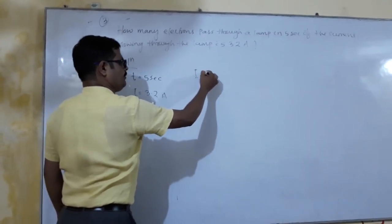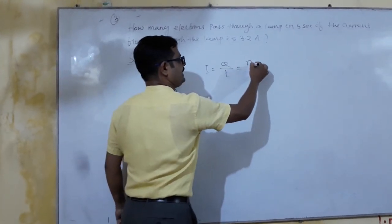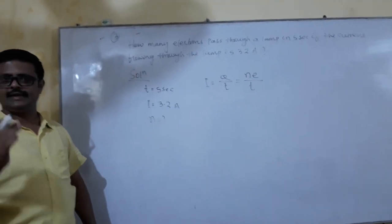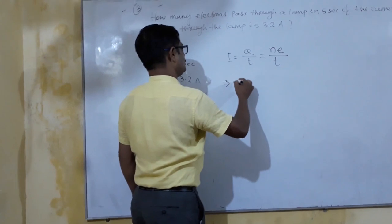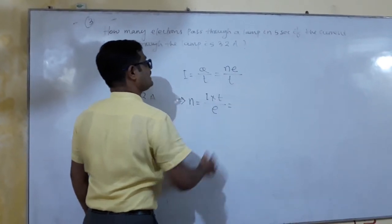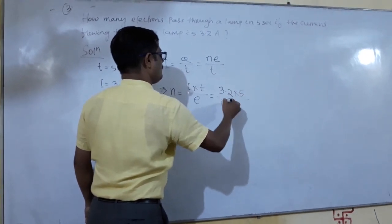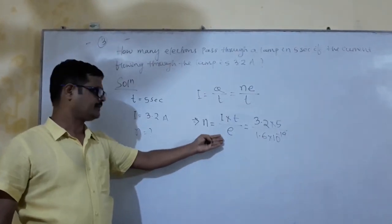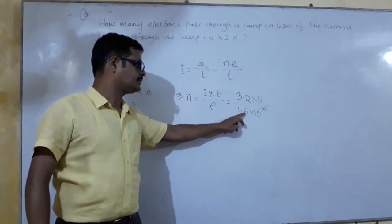Using the formula i equals q by t. The charge q can be written as n times e, where n is the number of electrons and e is the charge of one electron. So i equals n times e divided by t, which gives n equals i times t divided by e. Here i equals 3.2, t equals 5 seconds, and e equals 1.6 times 10 to the power minus 19.